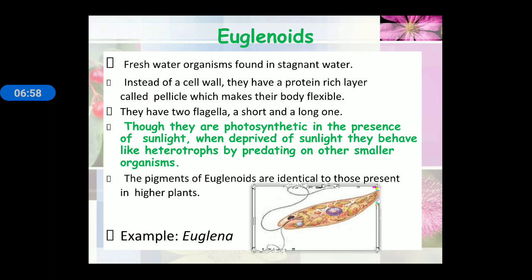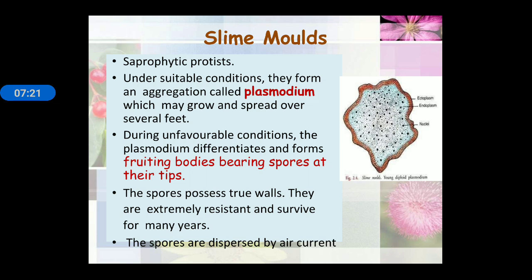Next is euglenoids — fresh water organisms found in stagnant water. Instead of a cell wall, they have a protein-rich layer called pellicle, which makes their body flexible. They have two flagella: a short one and a long one. They are photosynthetic in nature when sunlight is present, and when sunlight is absent they may work as heterotrophs. Example: Euglena.